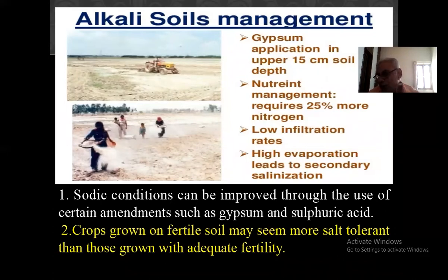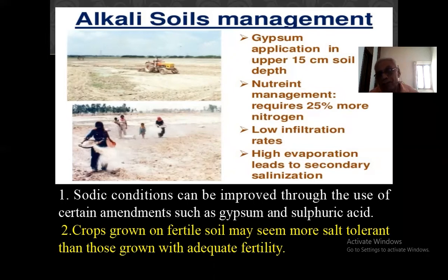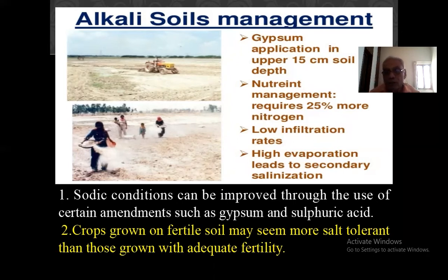Suppose you are growing rice crop requiring 100 kg nitrogen, 50 kg phosphorus, and 50 kg potassium. Then you have to apply 25 percent more: that is 125 kg nitrogen, 62.5 kg phosphorus, and 62.5 kg potassium per hectare. But in normal conditions, 100-50-50 is sufficient per hectare.